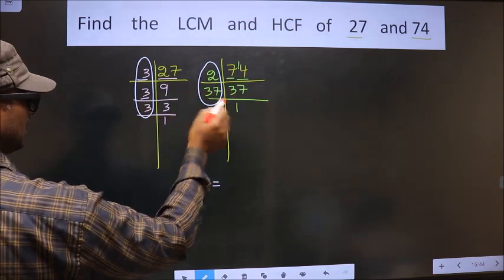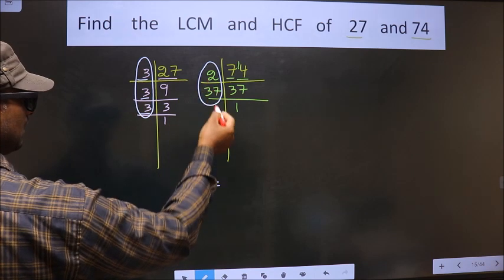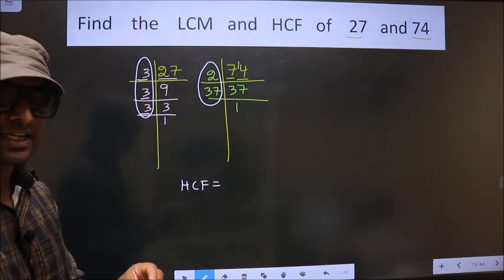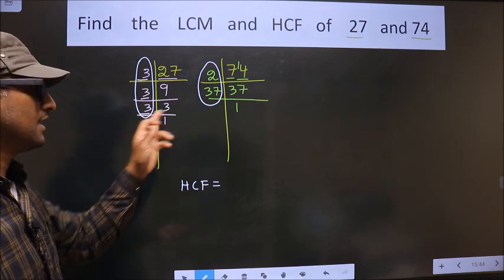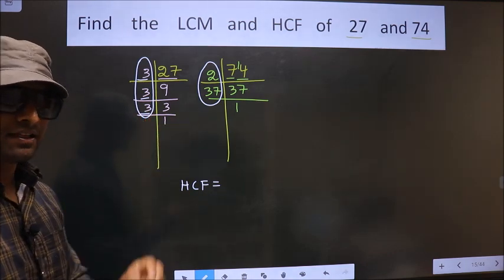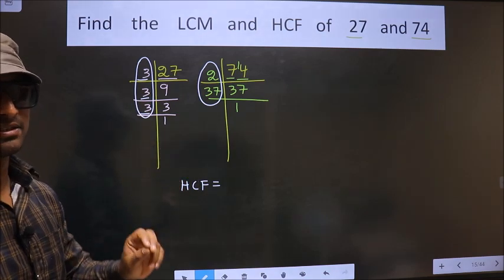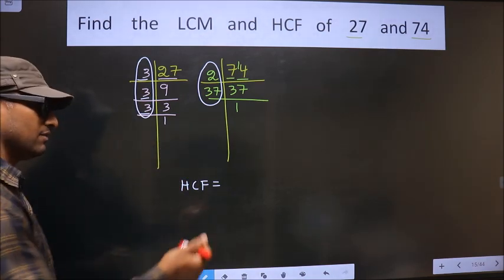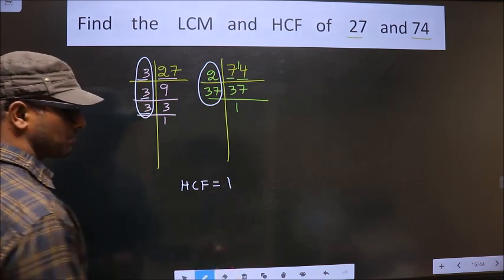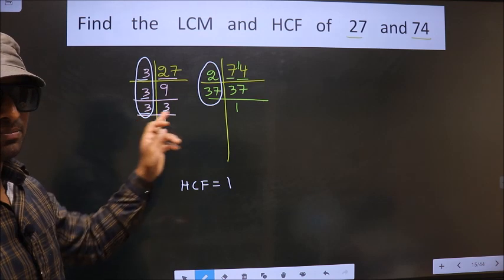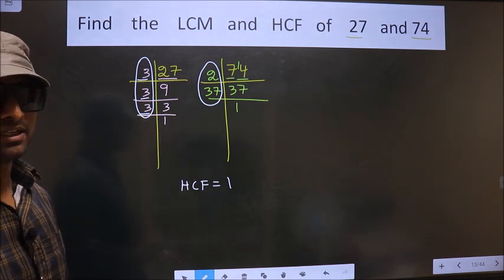Next 3, do we have it here? No. Next 3, do we have it here? No. So we don't have any numbers present in both places. Whenever we don't have any number present in these two places, the HCF will be 1. Remember that. No number is common, then your HCF is 1.